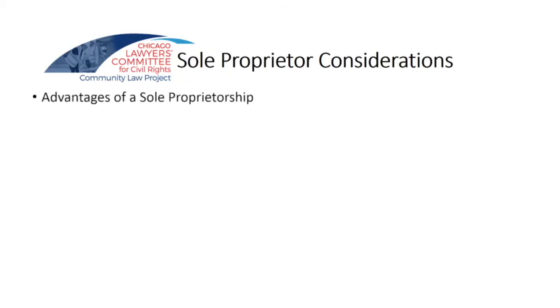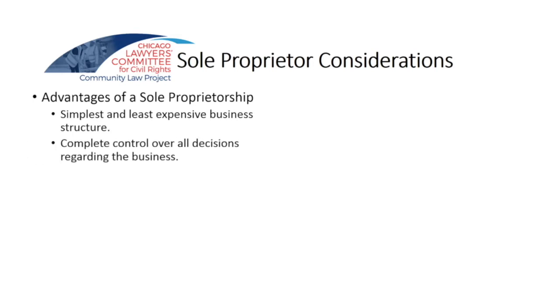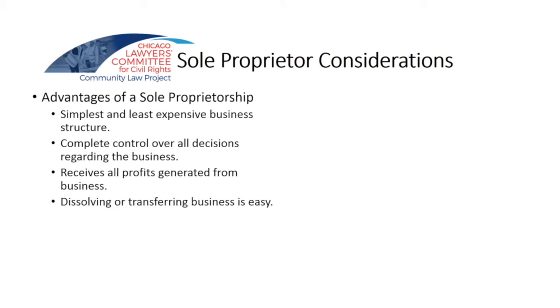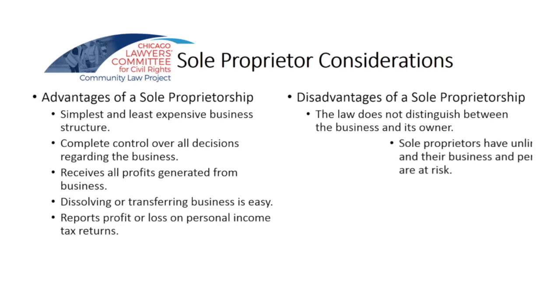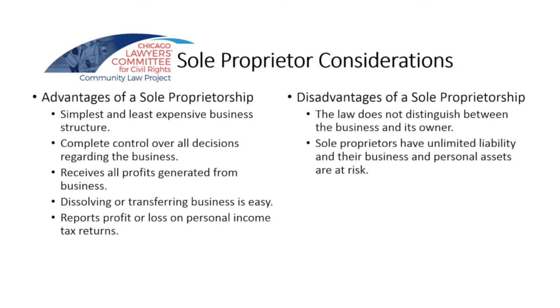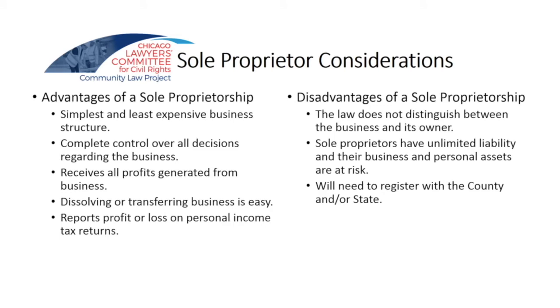Some advantages of the sole proprietorship: it's the most simple and least expensive form of business entity. You have complete control over all decisions regarding the business. You receive all profits generated personally. You can dissolve the business at any time without worrying about other partners. You report profits and losses on your personal income tax returns. The disadvantages: the law will not distinguish between you and your business. You have unlimited liability with respect to business operations — your personal assets are at risk. If the business goes bad and you own a house, they could come after your house or anything else you own. One other caveat: you will need to register the business name with the county.